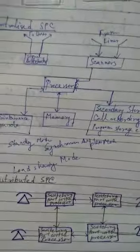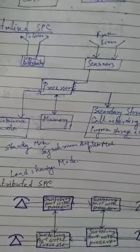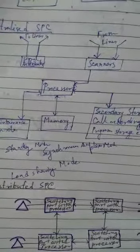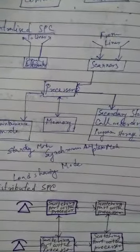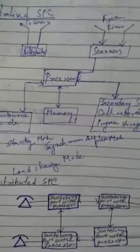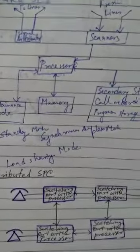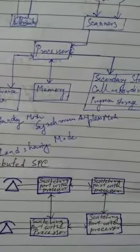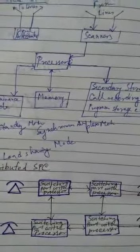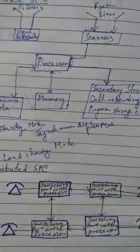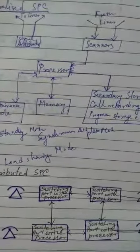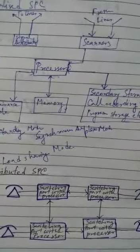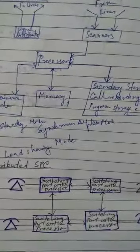Such distributed control, where switching equipment is divided into parts each of which has its own processor, is indicated in this figure. The exchange environment in vertical decomposition is divided into several blocks, and each block is assigned to a processor that performs all the control functions related to that specific block of equipment. Whereas in horizontal decomposition, each processor performs one or some of the exchange control functions.